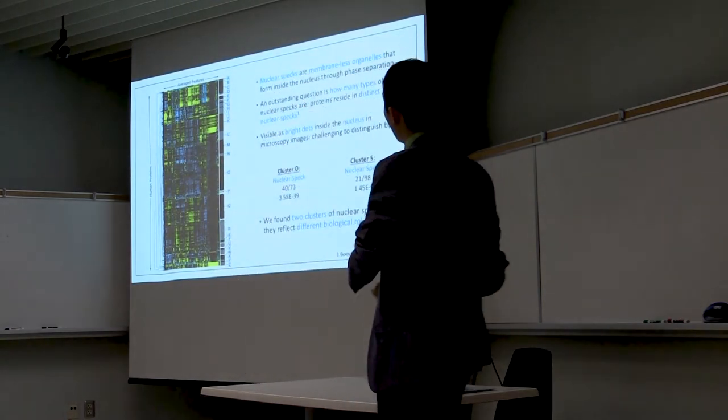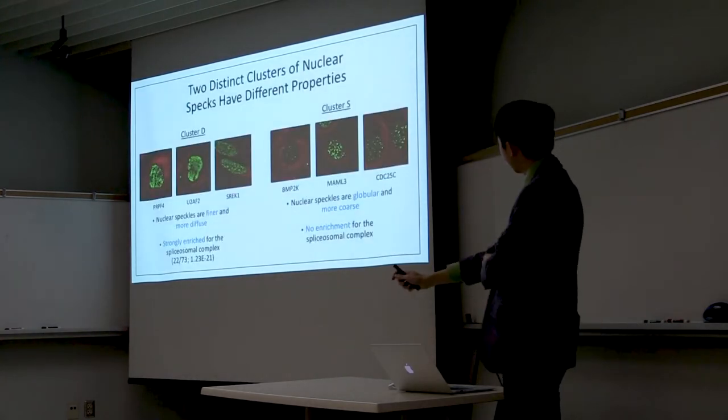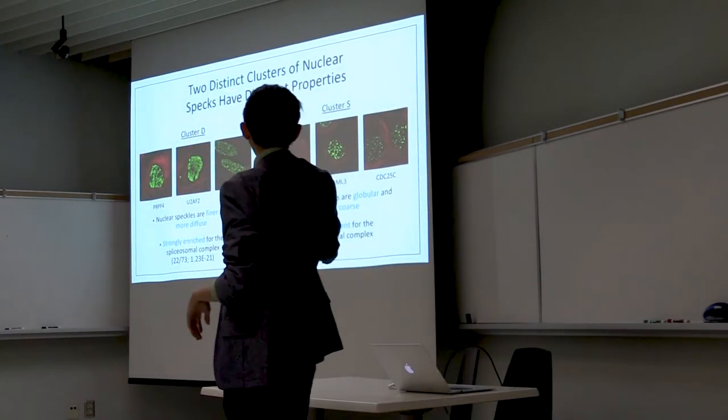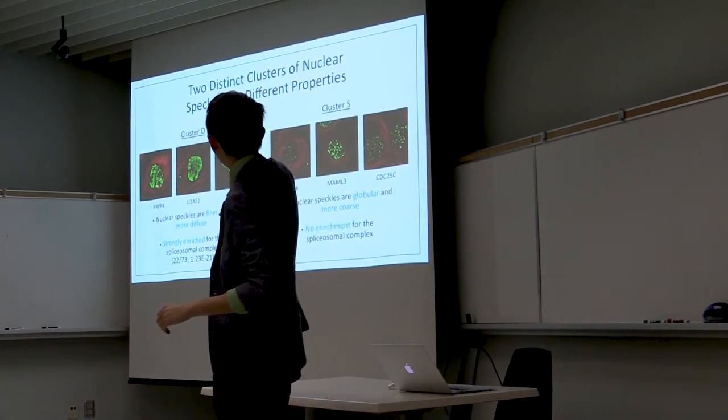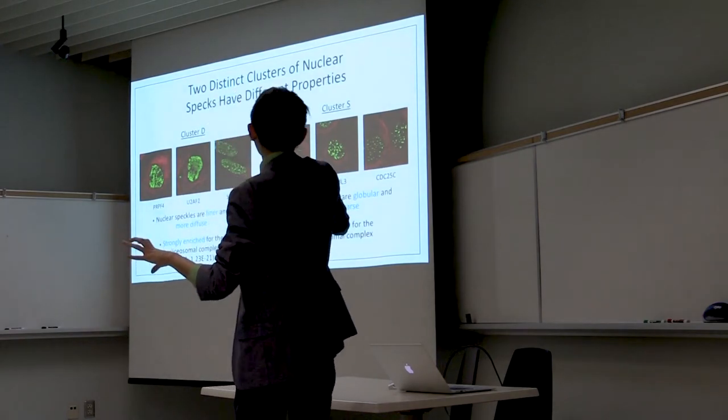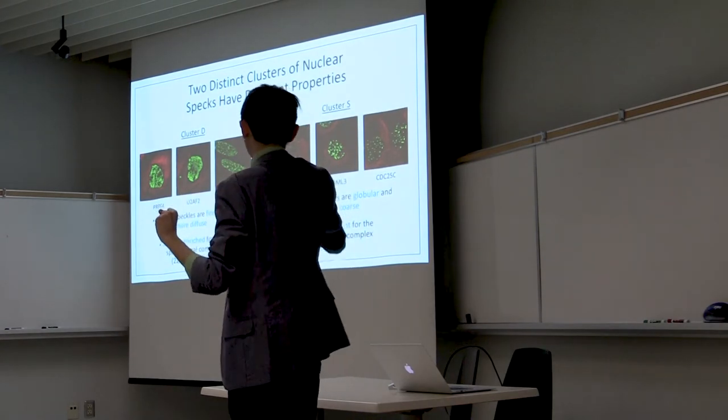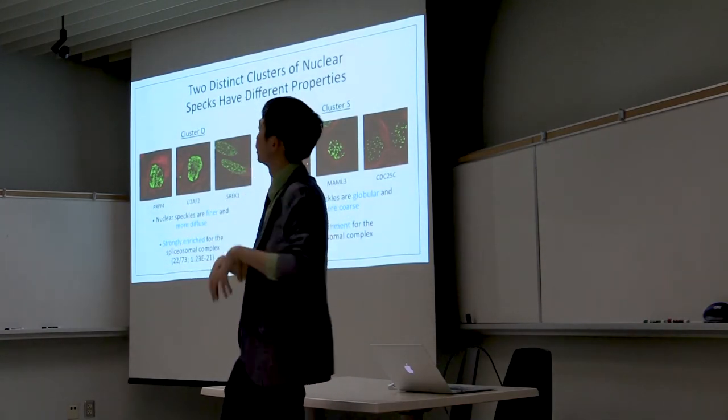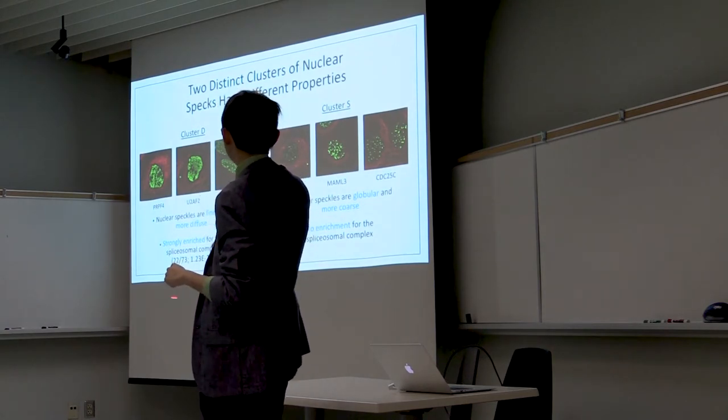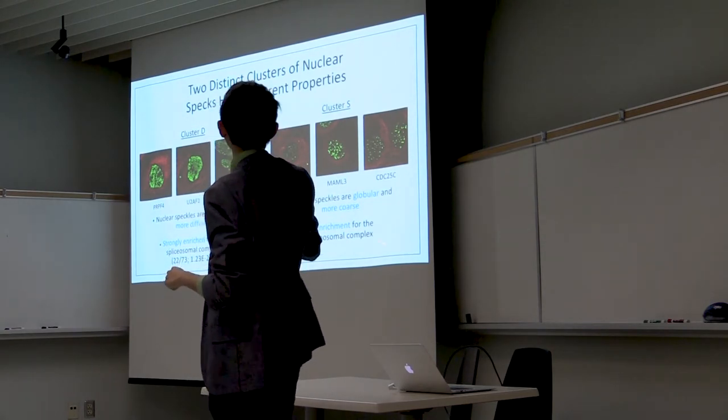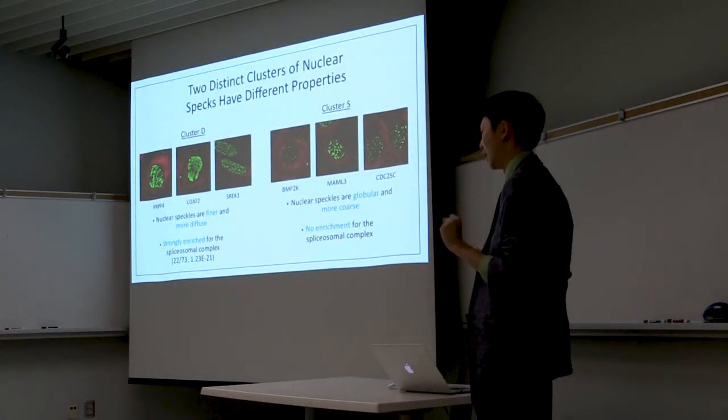A follow-up analysis we wanted to do is, do these nuclear specks seem to reflect different biological roles? So we looked at this in more detail, and you can see, right off the bat, they have very different visual features. The nuclear specks in cluster D seem to be more fine and more diffuse within the nucleus, whereas the nuclear specks in cluster E seem to form tons of puncta within the nucleus. And that's manual assessment, it's not reliable. But when you look at the enrichment within each cluster, you can see that cluster D is strongly enriched with the spliceosome complex, but there's no such enrichment in cluster E, which supports the idea that we found different subclasses of nuclear specks in our data.